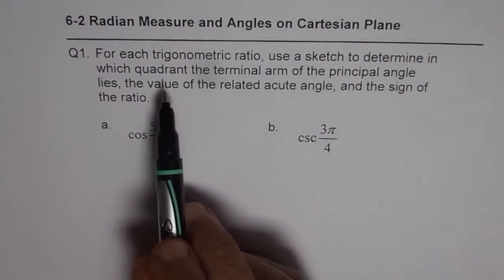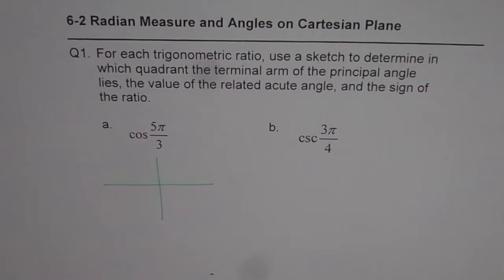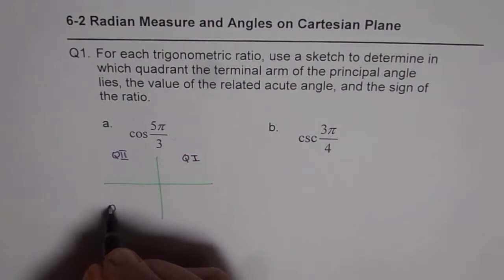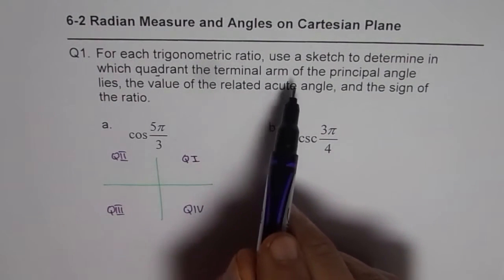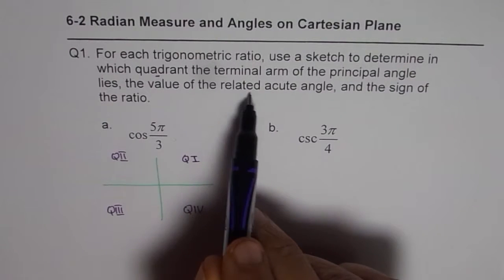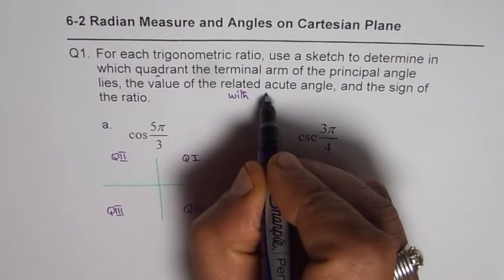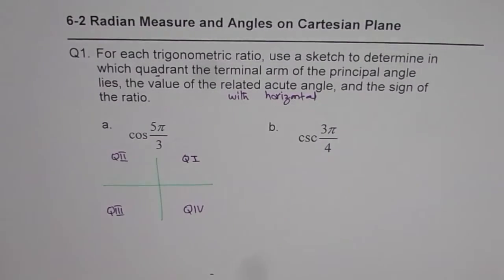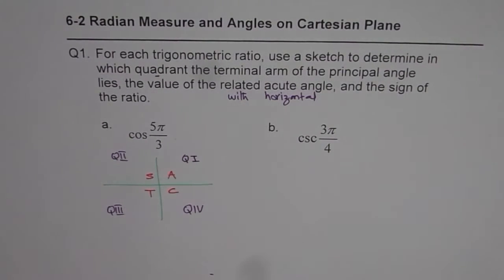First is the quadrant. Let me make the Cartesian plane here. In this Cartesian plane we have four quadrants: quadrant one, quadrant two, quadrant three, and quadrant four. The related acute angle means the angle with the horizontal. And the sign of the ratio — you get that with the CAST rule. C-A-S-T: cosine is positive in quadrant four, all are positive in quadrant one, sine is positive in quadrant two, and tan is positive in quadrant three.